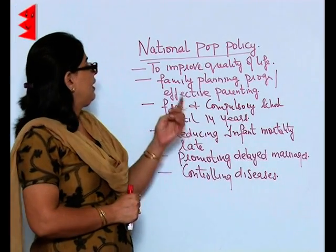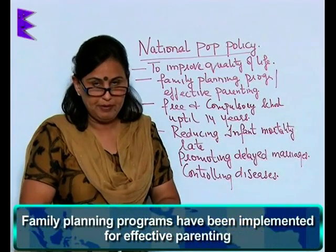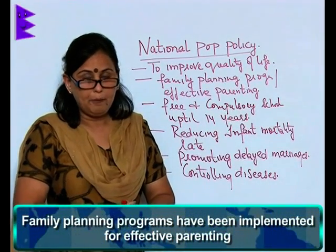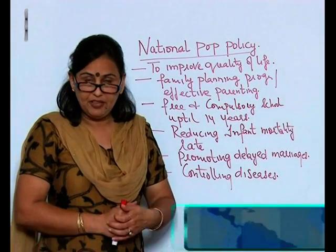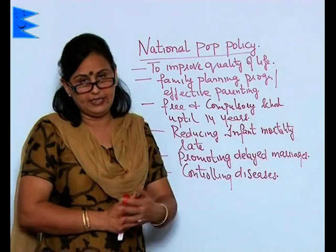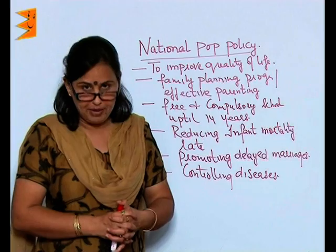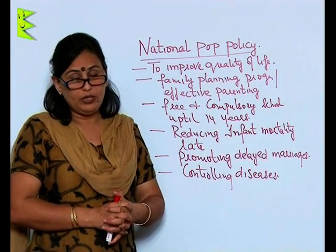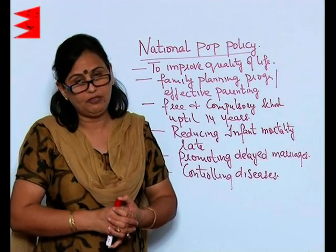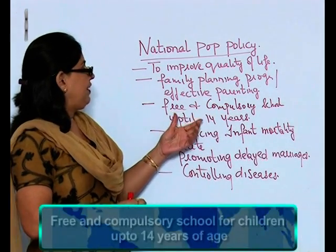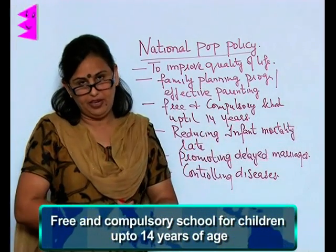Family planning programs have been implemented so that people give effective parenting. If the number of children in a family is less, naturally the kind of attention and food they will get will be better than in a large family. Free and compulsory schooling for all children above 14 years of age is also an objective.